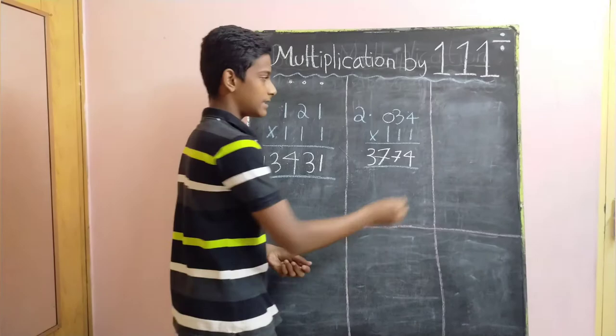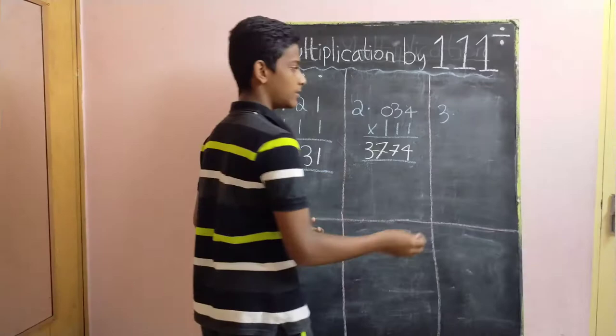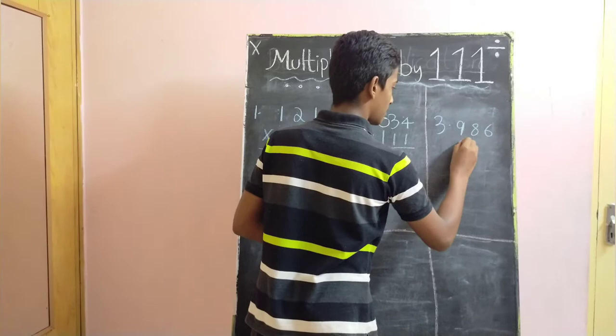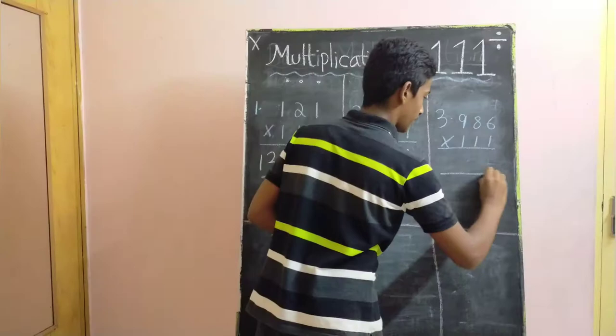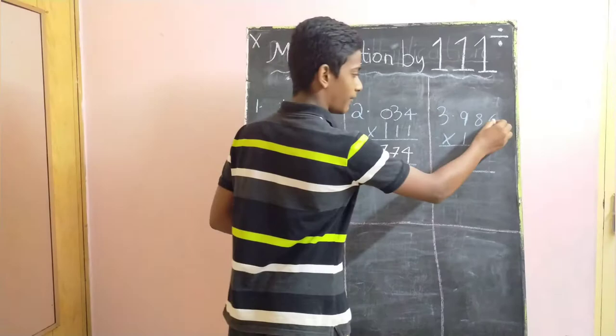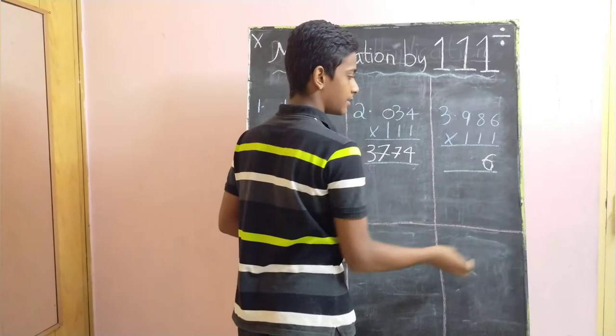Let's look at the last example with some carryovers. Let's take 986 multiplied by triple 1. Here, as we saw in the last 2 examples, we have to first bring down this 6, then add 8 and 6 which gives us 14.